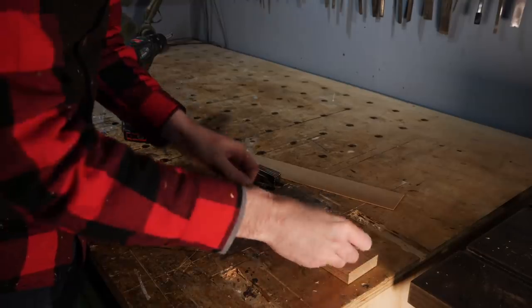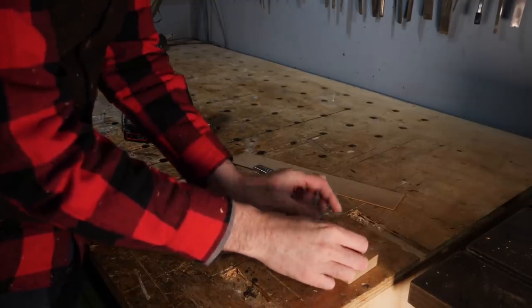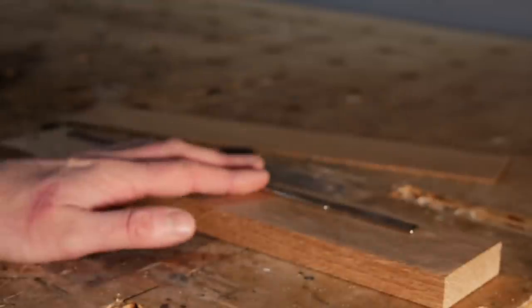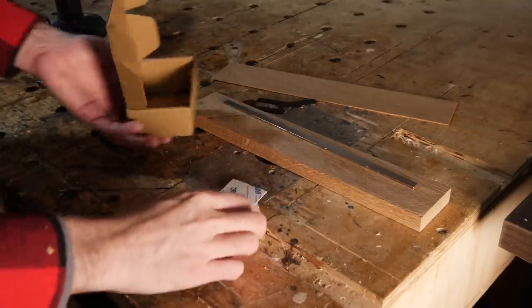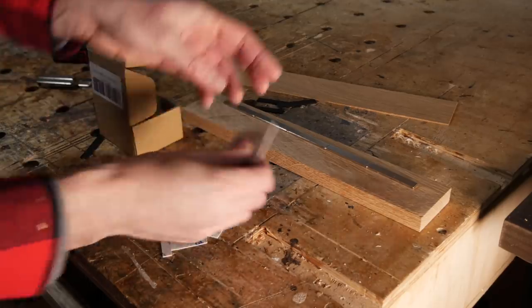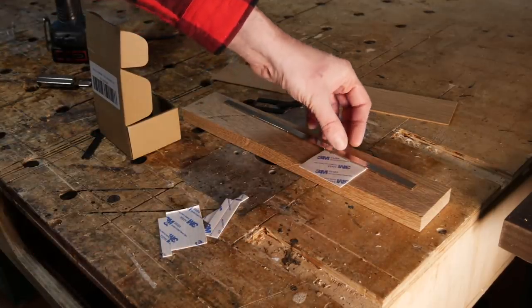I got some of these rare earth magnets from Amazon. I'll put a link down below under hardware. They're 60mm long by 10cm wide and 3mm deep. They also come with these sticky back tabs to stick them on, but I don't think I'm going to use those.